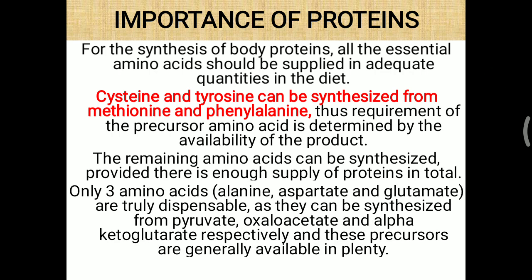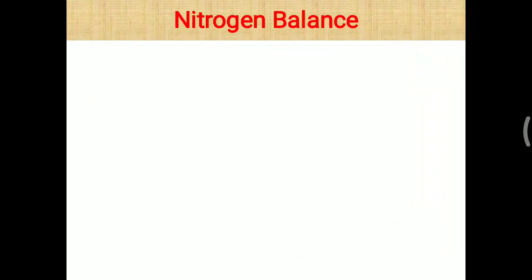Only three amino acids are truly dispensable: alanine, aspartate, and glutamate. Alanine is simply synthesized from pyruvate. Aspartate is closely related with oxaloacetate, and glutamate is related with alpha-ketoglutarate. These precursors — pyruvate, oxaloacetate, and alpha-ketoglutarate — are produced in the TCA cycle as well as glycolysis and can be interconverted correspondingly for the amino acids. These precursors are generally available in plenty, so these amino acids are considered dispensable.